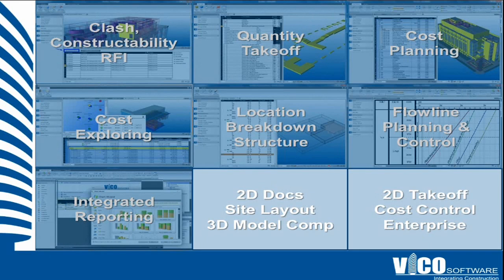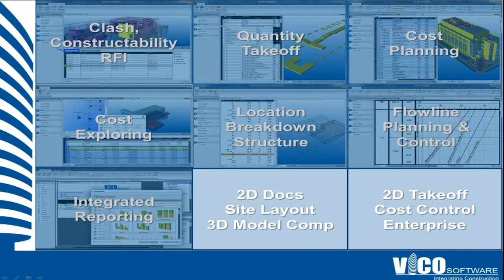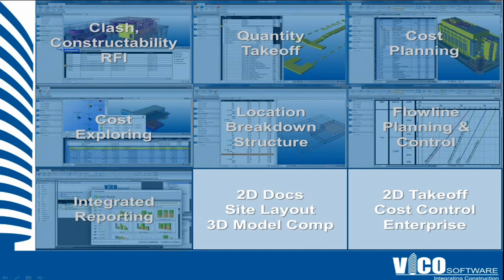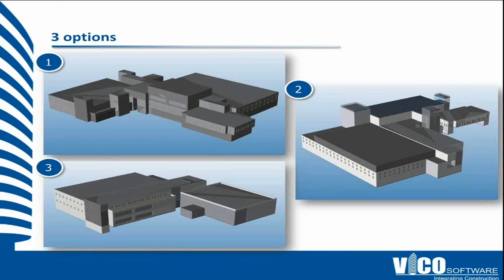Essentially we are able to take models, do a clash detection, do a quantity takeoff, and use those quantities for cost planning, explore the costs as they change, break the building into locations so that we can use quantities by location for the scheduling, and then have a full reporting back-end so that we can create cut-and-slice very customized reports. This is the process that we'll take you through.